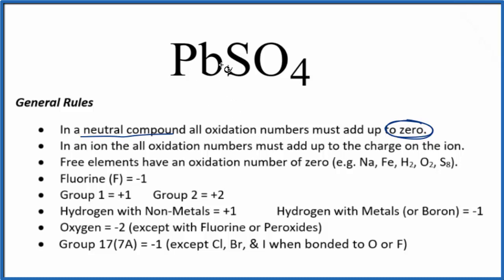What we need to recognize to figure out the oxidation number on the Pb here is that we have a sulfate ion, SO4, and that always has a two minus ionic charge. Because it's an ion, all the oxidation numbers in that SO4